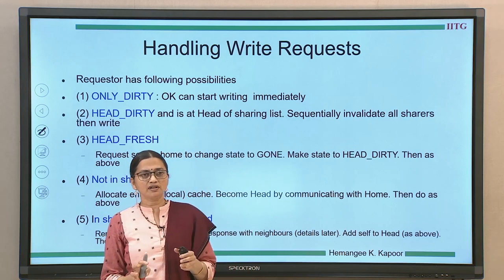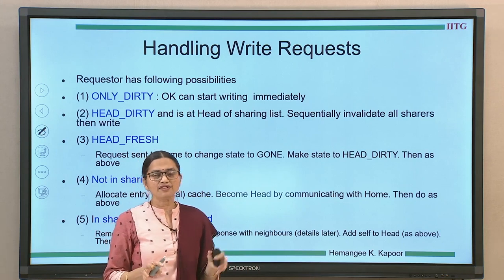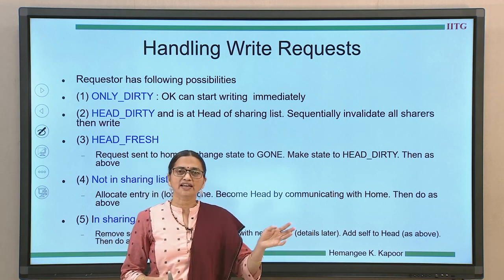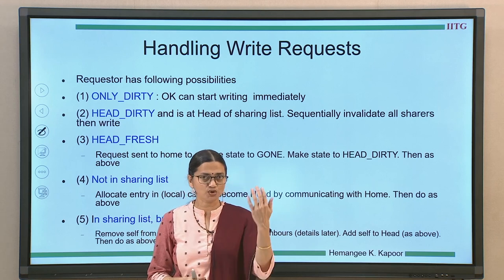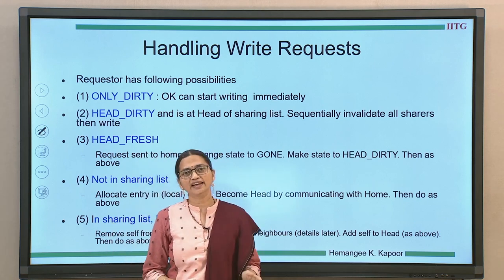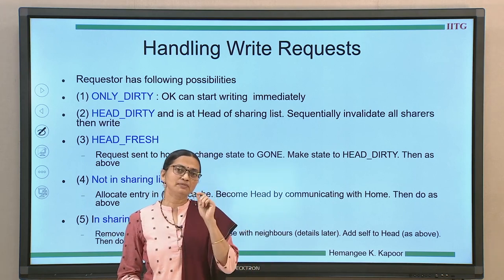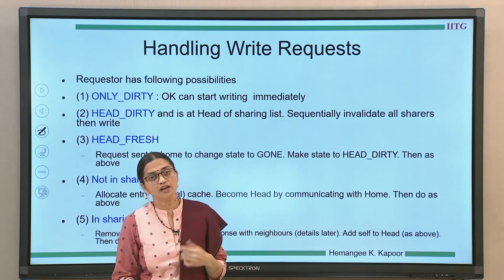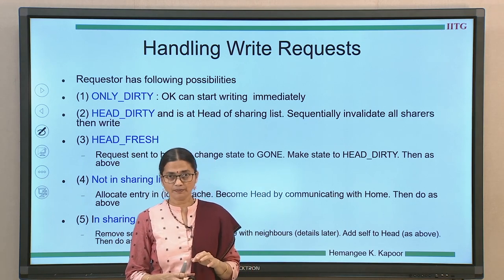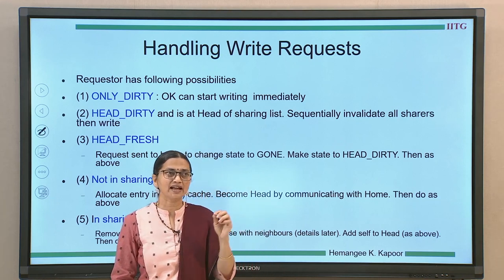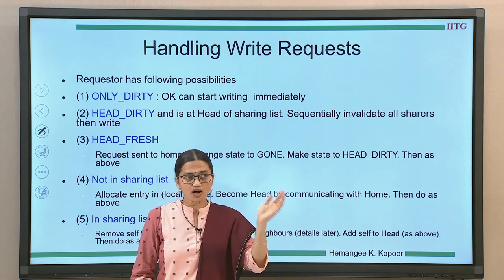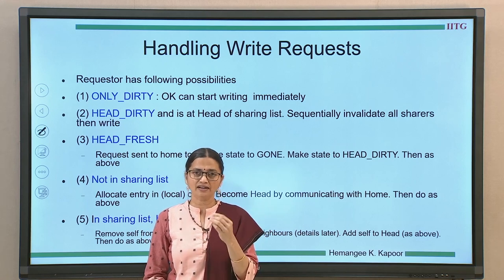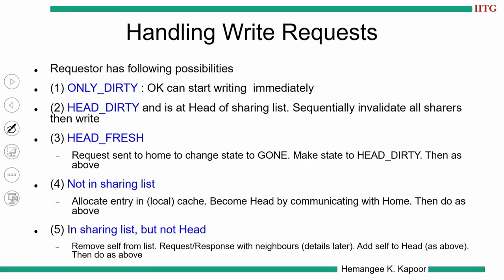The requester has five different possibilities of its location in the distributed linked list. One: it is not there in the sharing list, so it has to get added as the head. Two: it is in the sharing list but not the head — it is in the middle — so it has to remove itself, attach as the head, and only then write. Three: it is already the head node. When it is head, there are possibilities that the directory state is either fresh or gone, making the head either fresh or gone. The fifth case is it is the only node with dirty status.